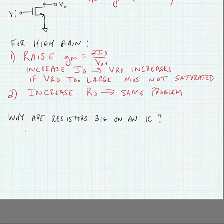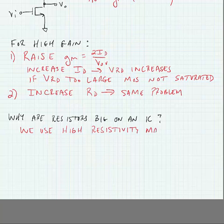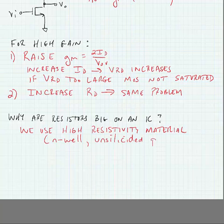Well the way that we make these is we use a high resistivity material and this might be something like an undoped n well or a lightly doped n well. It could be unsilicided poly or other materials. Basically just materials that have very low conductivity. But even these materials don't have such a low conductivity that they don't require a lot of material.